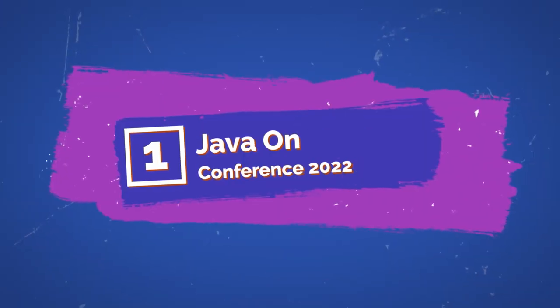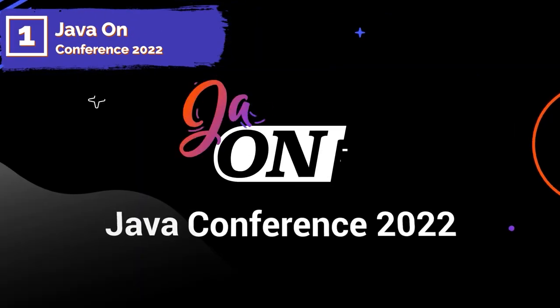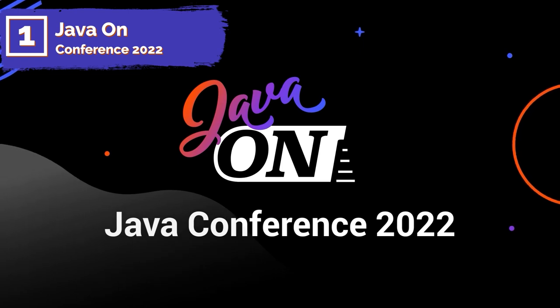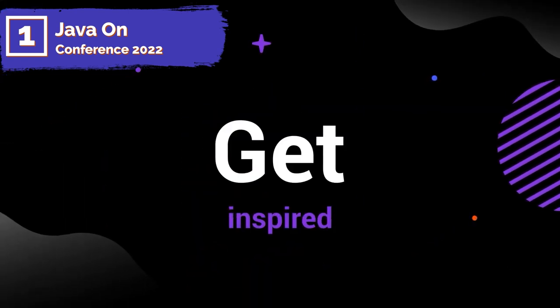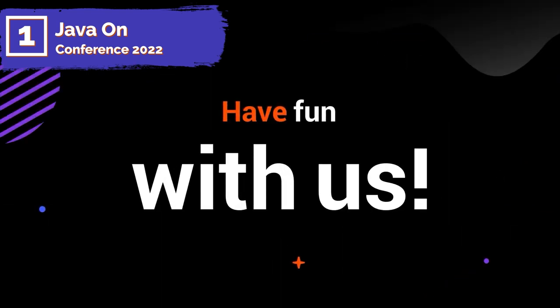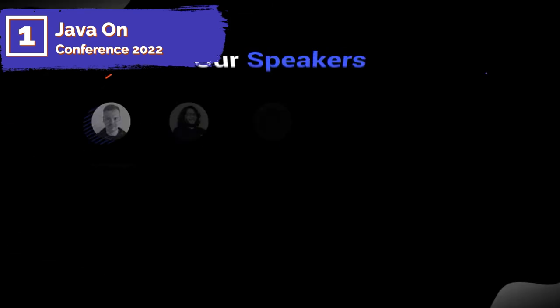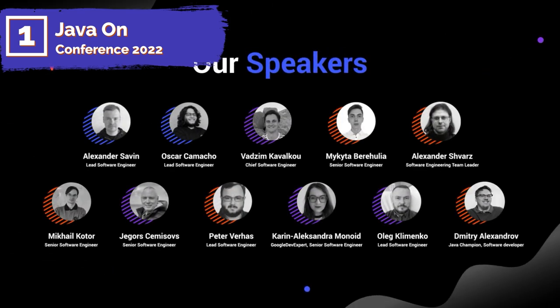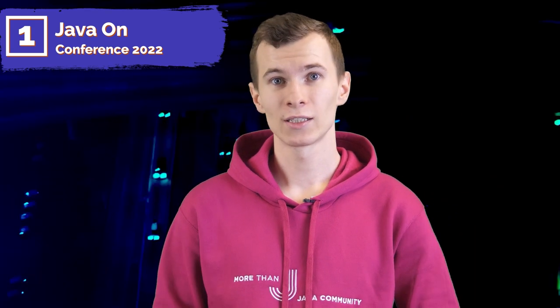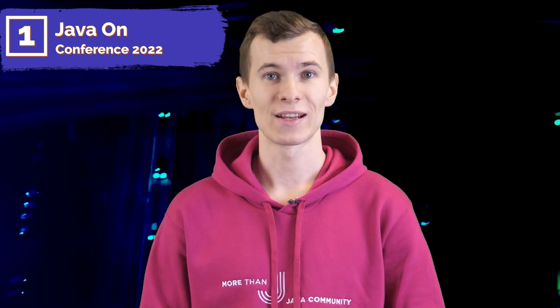Let's start from the awesome news about very soon events. Java ON Conference 2022 will be held between 7th and 8th December and it will be online and completely free. You can expect 2 days, 10 talks and more than 3000 participants. You will be able to listen to speakers from 10 countries on topics about Scala, Serverless, Functional Programming, Big Data and many more. In the description you will find a link to the registration. It is super easy, so do not waste your time and register right now.